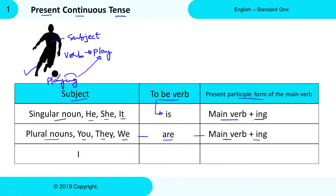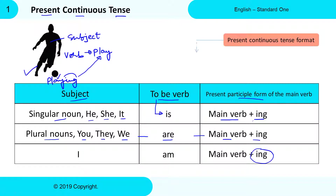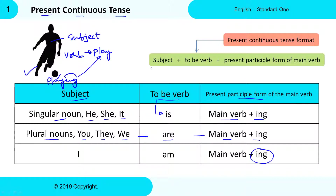Whenever you talk about yourself or use 'I' as the Subject, then add 'am' as the to-be Verb. After the to-be Verb, write the Present Participle Form of the Main Verb by adding -ing to the Main Verb. So all Present Continuous Tense sentences follow this format: first write Subject, after that write the to-be Verb, and later write the Present Participle Form of the Main Verb — which you get by adding -ing to the Main Verb, as seen in all three rules.